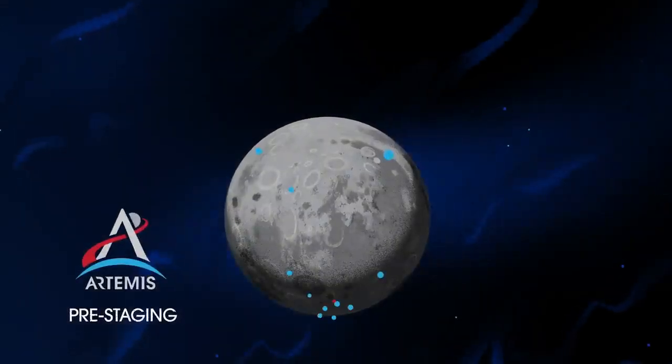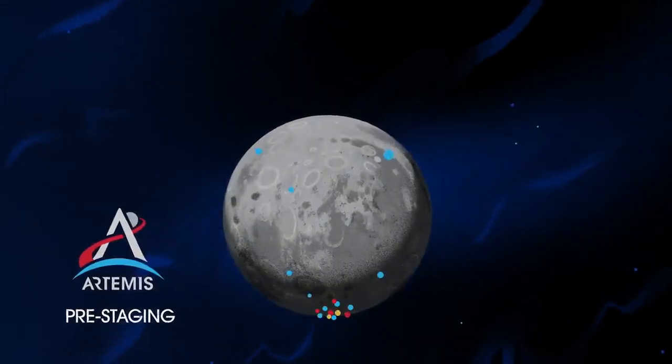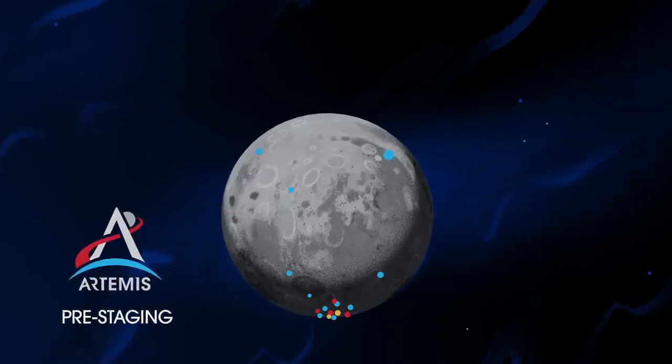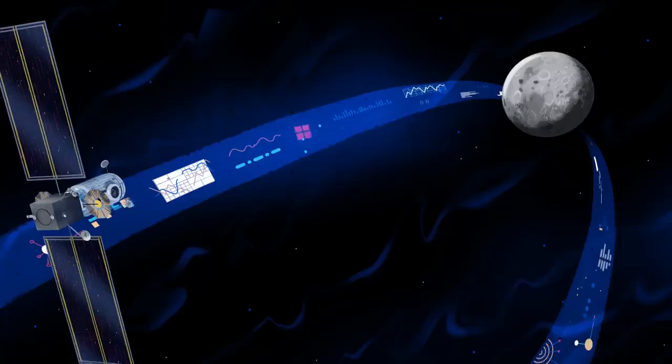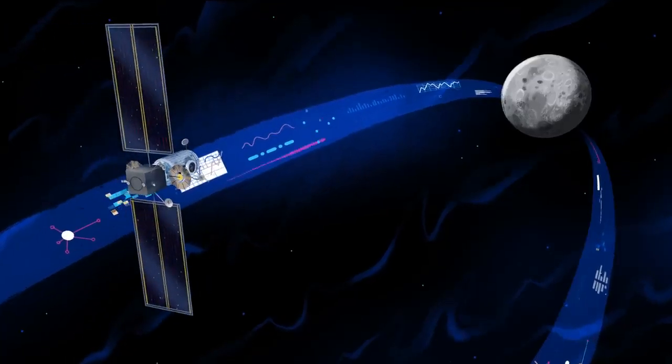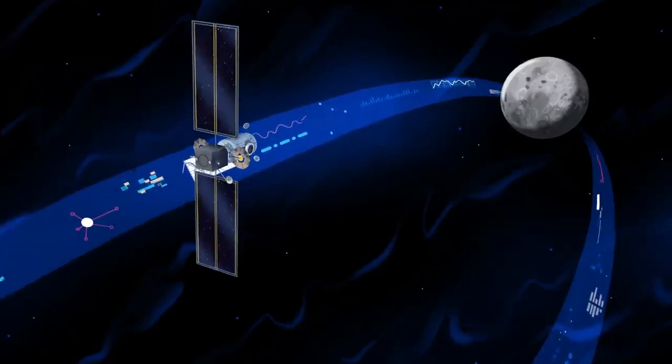Everything needed for lunar missions will be positioned in advance by commercial and international partners. This includes rovers, science experiments, and human-rated systems on the surface. But it also includes a dedicated lunar station in orbit around the Moon called Gateway.